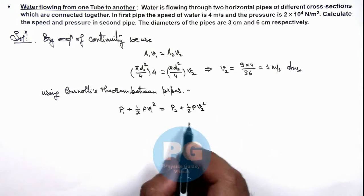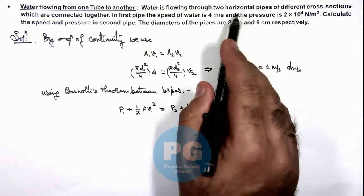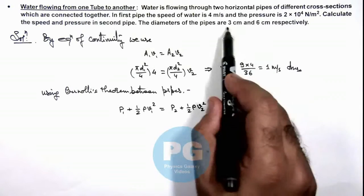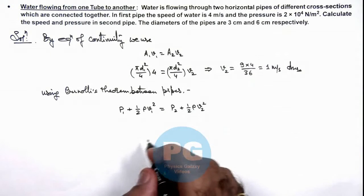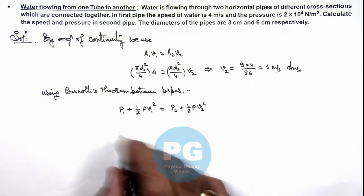Here we are assuming that the pipes are horizontal and there is no height significance of 3 centimeters and 6 centimeters, as we consider their level to be approximately the same.